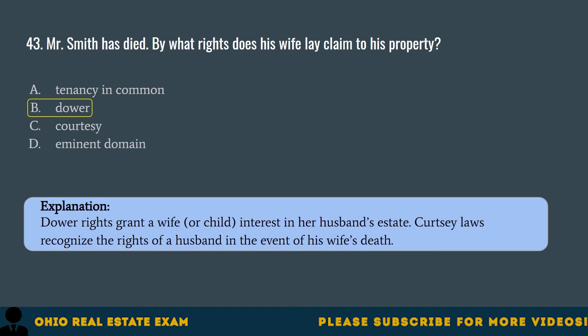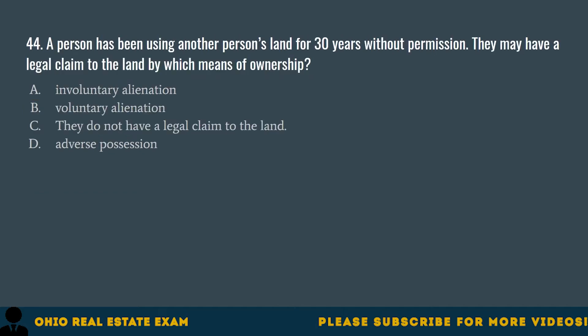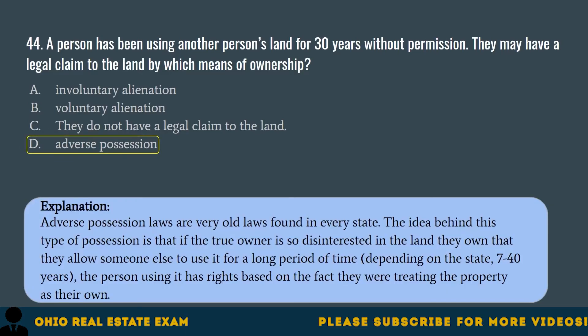Question 44. A person has been using another person's land for 30 years without permission. They may have a legal claim to the land by which means of ownership? A. Involuntary alienation. B. Voluntary alienation. C. They do not have a legal claim to the land. D. Adverse possession. The correct answer is D. Adverse possession. Adverse possession laws are found in every state. If the true owner allows someone else to use their land for a long period of time — depending on the state, 7 to 40 years — the person using it may gain rights based on the fact they were treating the property as their own.